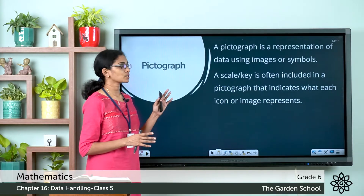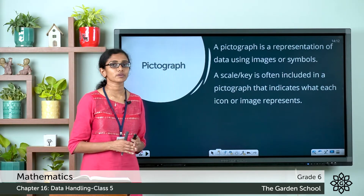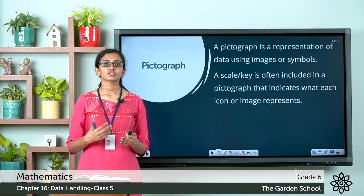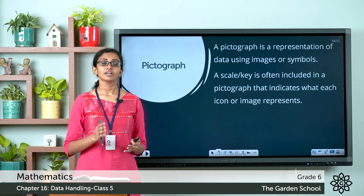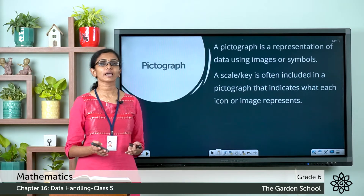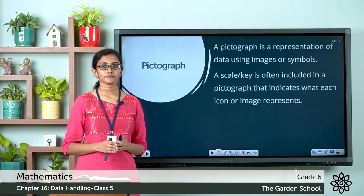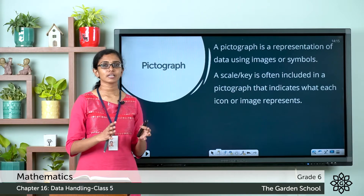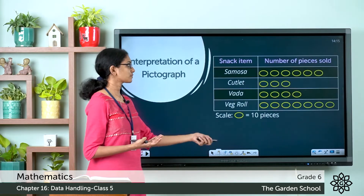A pictograph is a representation of data using images and symbols. We usually include a scale, also called the key, which tells us the value represented by each icon or symbol. The steps for making a pictograph are: first, collect and review the data; second, pick a symbol to be used; third, assign a key or scale; then draw the pictograph; and finally, review the pictograph.